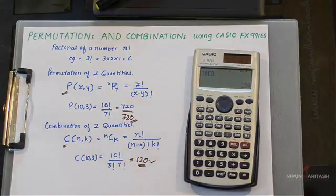So how cool and easy is that? I hope this quick tutorial was helpful in finding permutation and combinations using the Casio FX 991ES calculator.